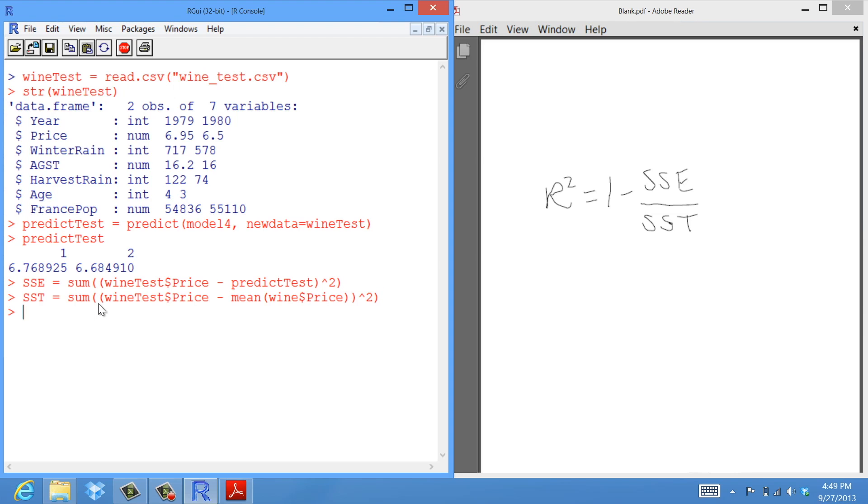To compute the R² now, we type 1 minus the sum of squared errors divided by the total sum of squares. And we see that the out-of-sample R² on this test set is 0.7944278.